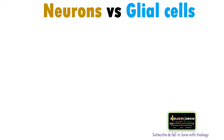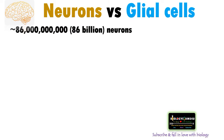Hi friends, hope you are fine. In this video let us understand glial cells and different types of glial cells within five minutes. For that we need to begin with neurons. As we know, neurons are the fundamental units or building blocks of the nervous system. In our brain there are approximately 86 billion neurons.